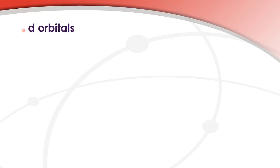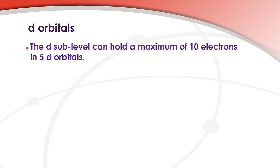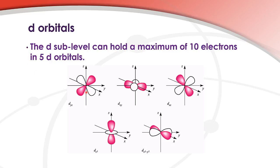D orbitals. The d sub-level can hold a maximum of 10 electrons in 5 d orbitals. Here are the shapes of the 5 d orbitals. These shapes are pretty complicated so you don't have to worry too much about them. What you do need to know is that each orbital can hold a maximum of 2 electrons and there are 5 d orbitals, so the maximum number of electrons in the d sub-level is 10.